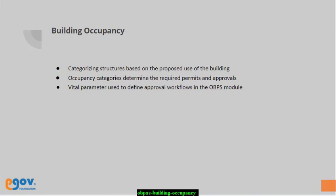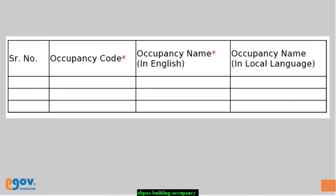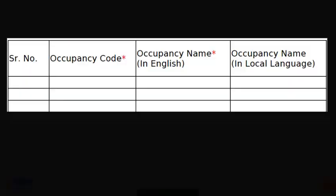Refer to the national bylaws to view the prescribed list of occupancy types, then download the data template. As we can see on the template, there are four columns: serial number, occupancy code, occupancy name in English, and occupancy name in local language.